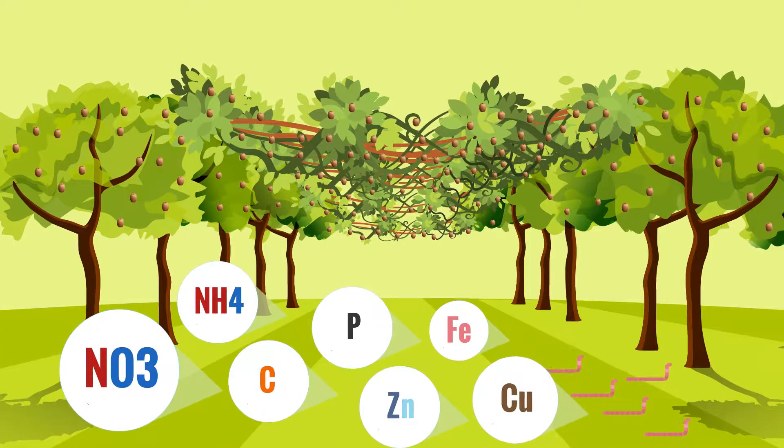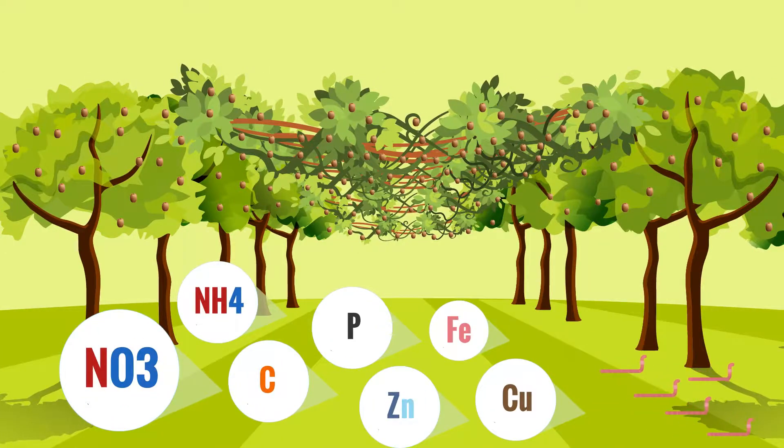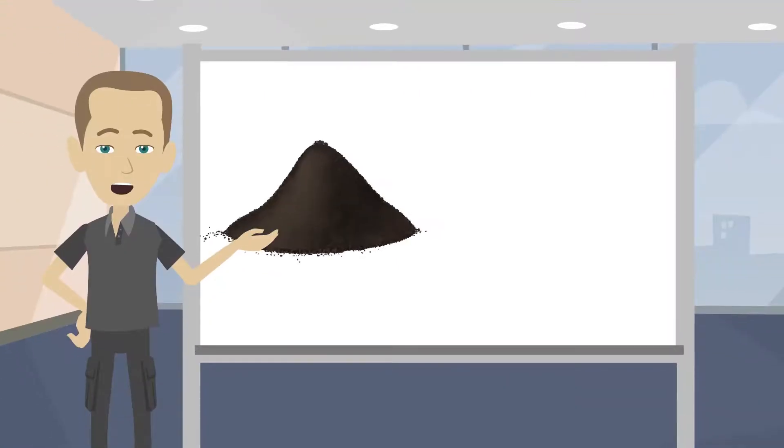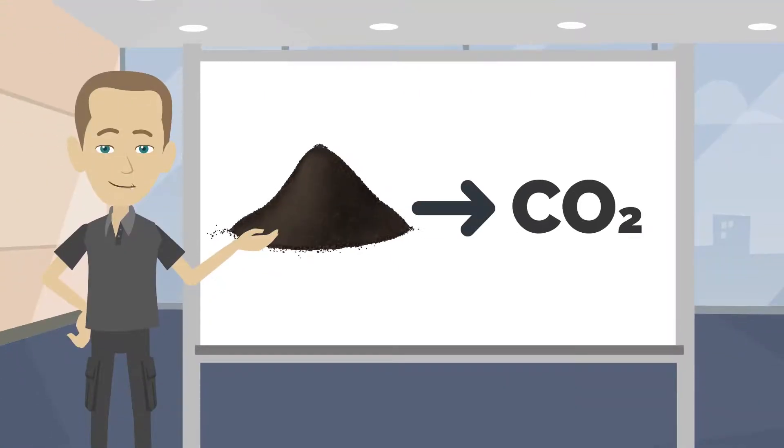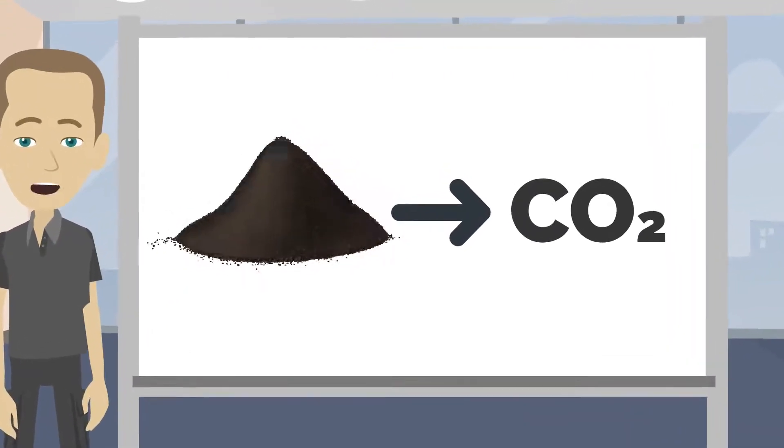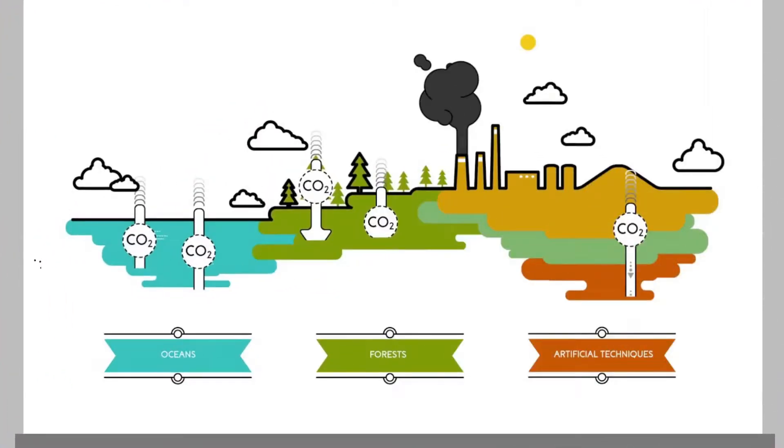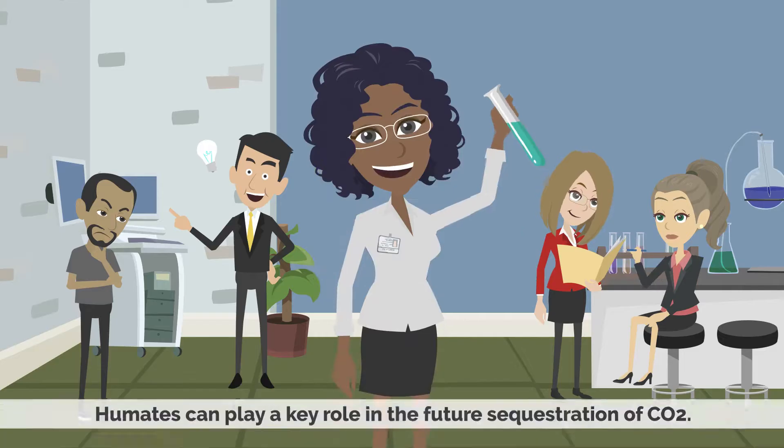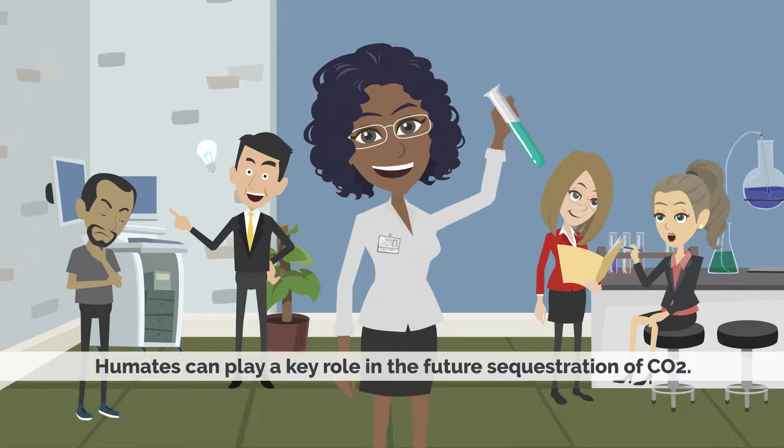Same for nutrients, more will be held in the soil for availability at a later date. Humates also enhance the soil's ability to act as a carbon sink, keeping CO2 in the ground instead of escaping into our atmosphere. Humates can play a key role in the future sequestration of CO2.